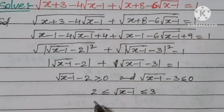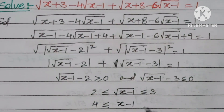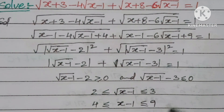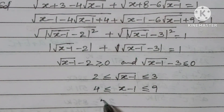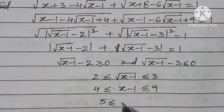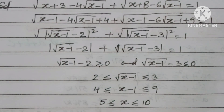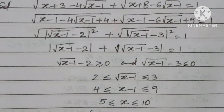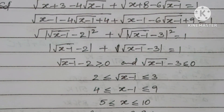Squaring all parts of the inequality: 4 ≤ x - 1 ≤ 9, which gives 5 ≤ x ≤ 10. Therefore the integer values of x are: 5, 6, 7, 8, 9, 10.